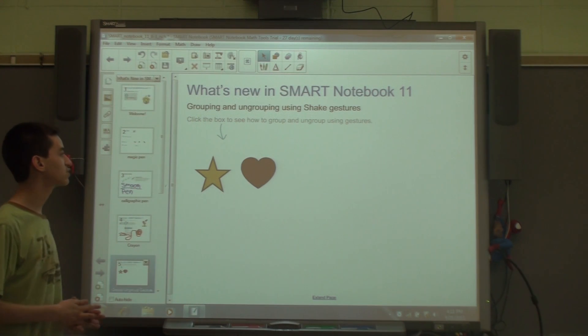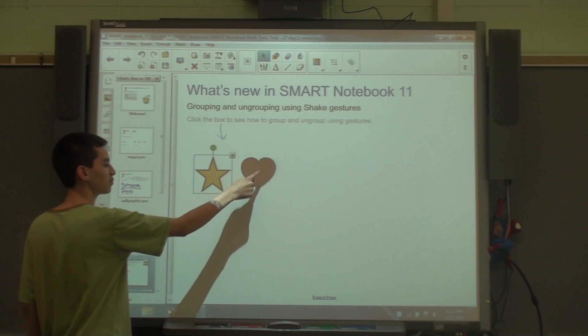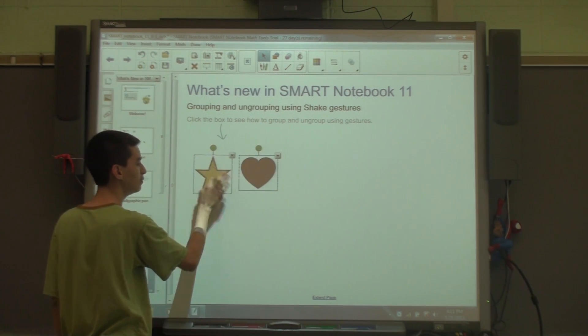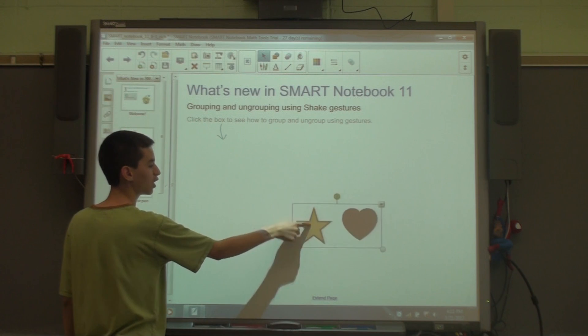New on Smart Notebook 11 is grouping and ungrouping using shape gestures. Here I have two separate objects. I'm going to highlight them, shake them, and it will form one object.